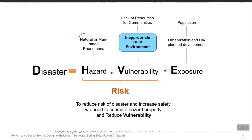Hazard means the phenomenon itself — an earthquake, its occurrence, how frequently it can occur, what is the probability of its occurrence. Vulnerability means the quality of construction that will handle that hazard. Poor or inappropriately built buildings result in high vulnerability, while good quality buildings result in low vulnerability. When you multiply hazard level by vulnerability level, you get risk level.